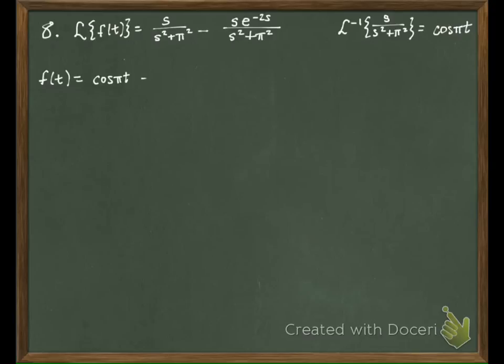The second part, I do have to apply the Heaviside function. So, it would look like u of t minus 2. And then it would be cosine of pi times t minus 2.